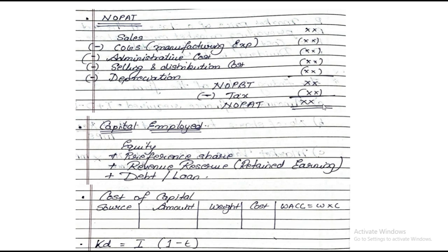Second, find Capital Employed. The formula is: Equity plus Preference Share plus Reserves plus Debt. When you add up your debt and equity components, you get Capital Employed. Third, find Cost of Capital using a table with columns: Source, Amount, Weight, Cost, and WACC (Weighted Average Cost of Capital). One important formula required is KD (cost of debt) = Interest × (1 − Tax). All these are required to get the value of EVA.